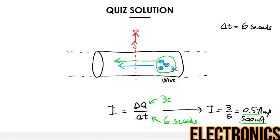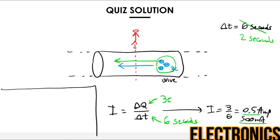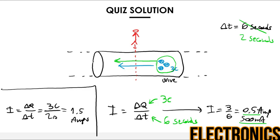The next question asks for the current when delta T is 2 seconds instead of 6 seconds, with everything else the same — the same charge observed as before. Using I equals delta Q over delta T, we know delta Q is 3 Coulombs and delta T is now 2 seconds, giving a final result of 1.5 Amps. The current is 3 times bigger than the previous 0.5 A, which makes sense because we have the same amount of charge during a time that is 3 times shorter, so the rate of charge is 3 times larger.